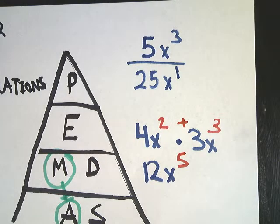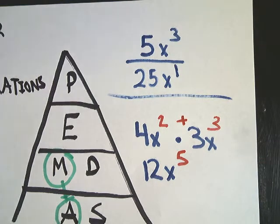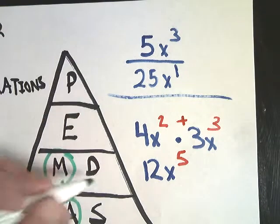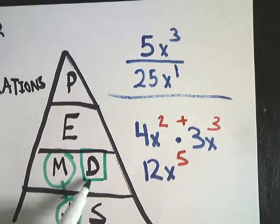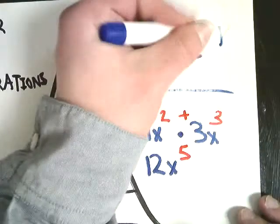Say I have 5x to the third over 25x to the first power. Now, in this scenario, the coefficients do what they're told. This line means divide of course. I'm going to separate that out so it's easier to differentiate them. So 5 divided by 25 is of course 1 fifth. So 1 over 5.